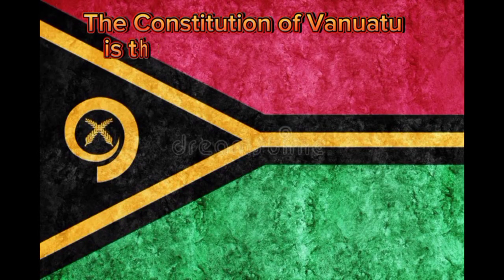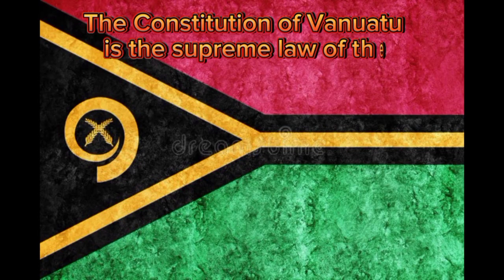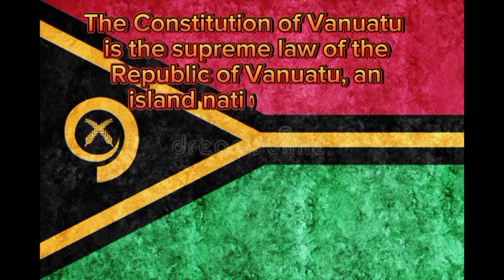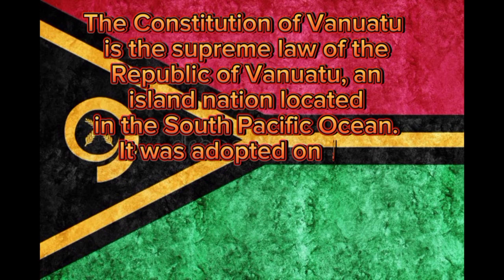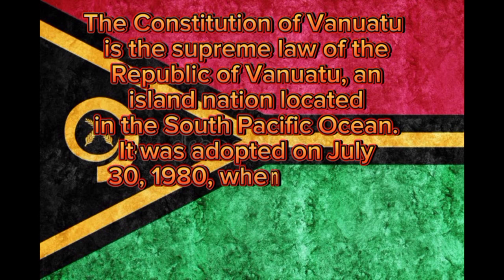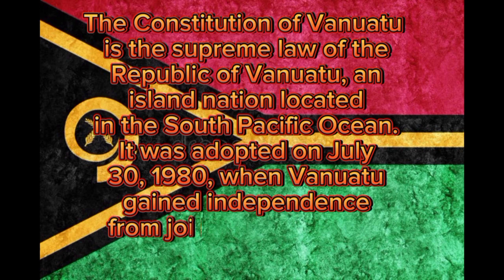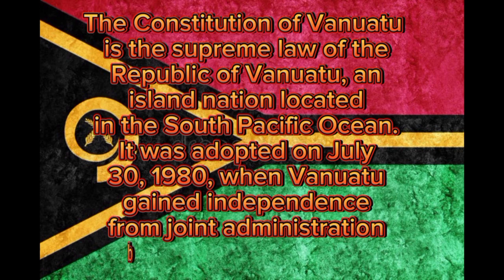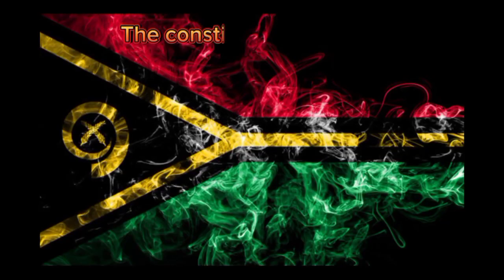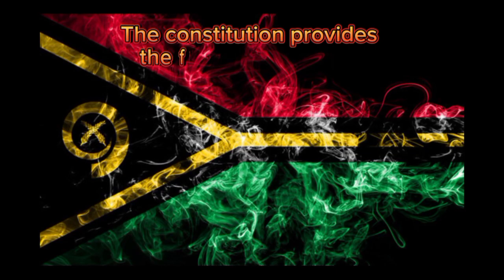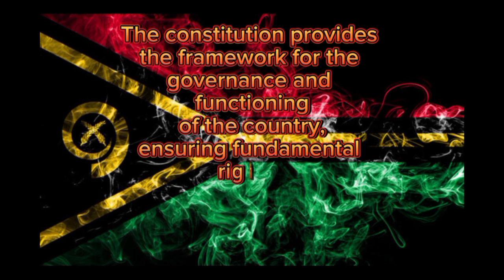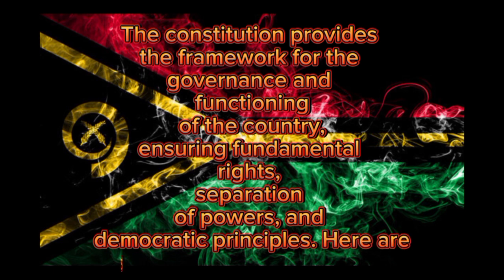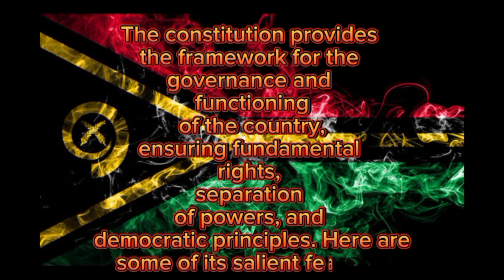The Constitution of Vanuatu is the supreme law of the Republic of Vanuatu, an island nation located in the South Pacific Ocean. It was adopted on July 30, 1980, when Vanuatu gained independence from joint administration by Britain and France. The Constitution provides the framework for the governance and functioning of the country, ensuring fundamental rights, separation of powers, and democratic principles. Here are some of its salient features.